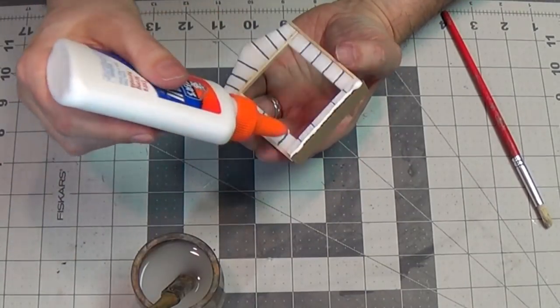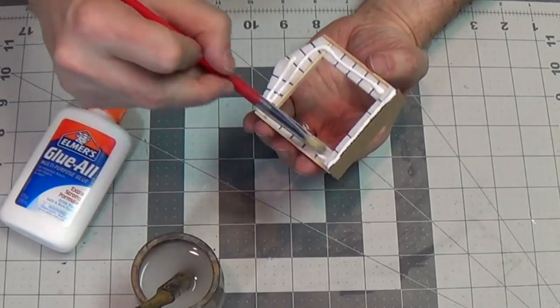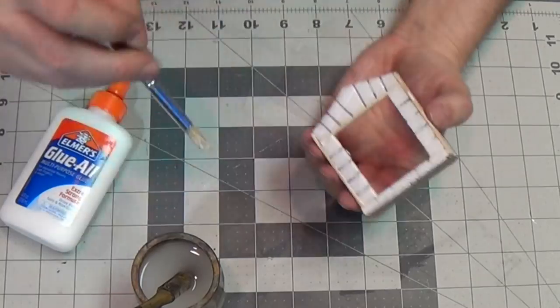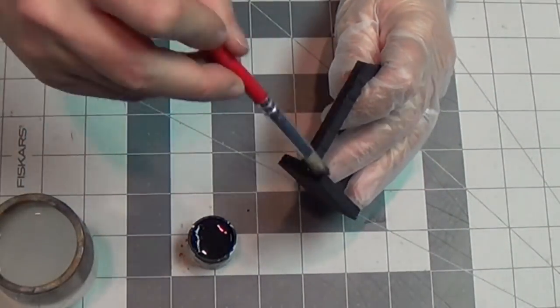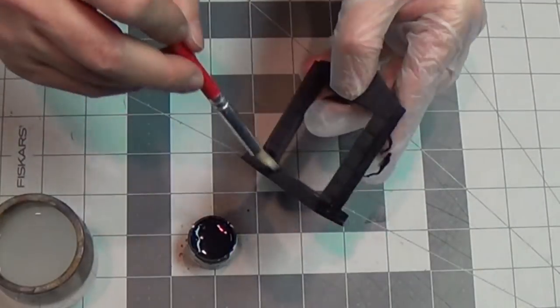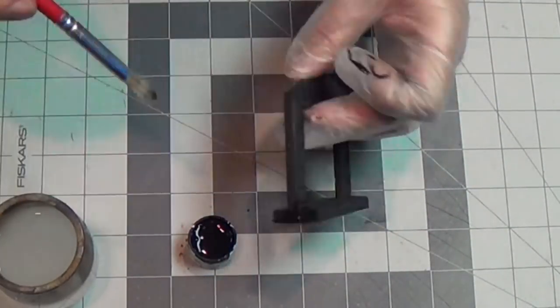Now I'm going to cover this with my Elmer's Glue All. Just wet the brush a bit. Cover it all up. Both sides. Now I've spray painted it flat black. And if there's any areas you missed, you can use the black acrylic to fill in.